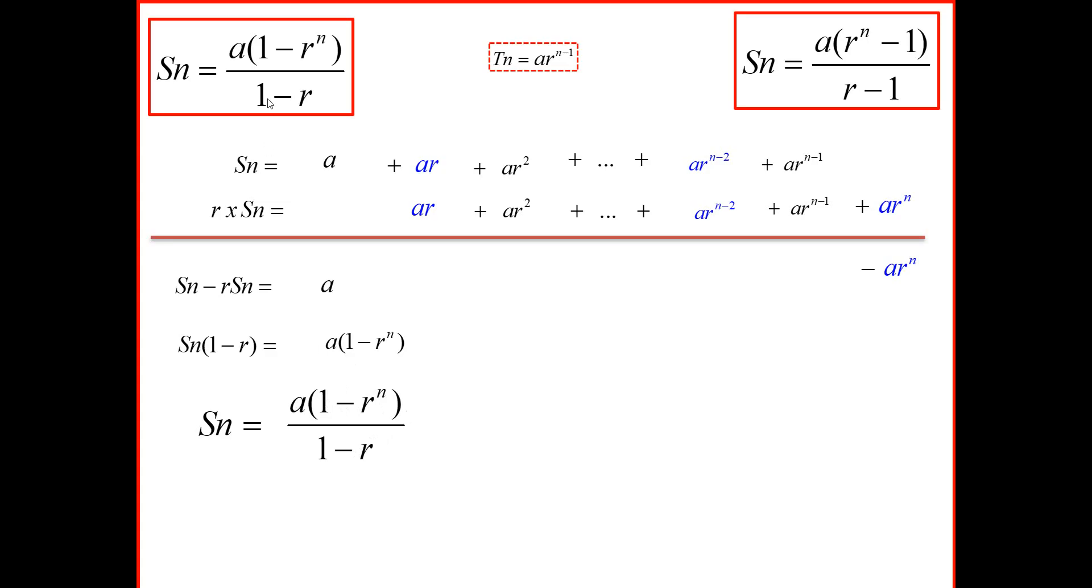And if we do a simple change of sign, we can now prove that Sn is equal to a times (r to the power n minus 1) divided by (r minus 1).